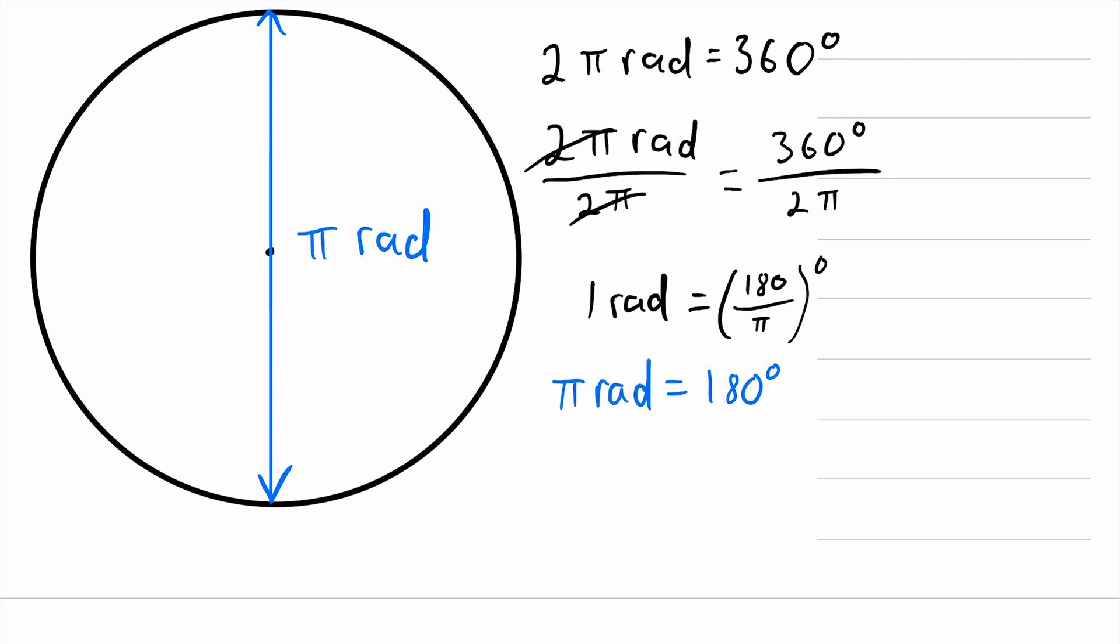So that's all there is to it. Whatever number of radians you have, multiply both sides of this equation by that number, and you'll have the equality you're looking for. You'll have that number of radians you're concerned with, and the number of degrees that it's equal to.